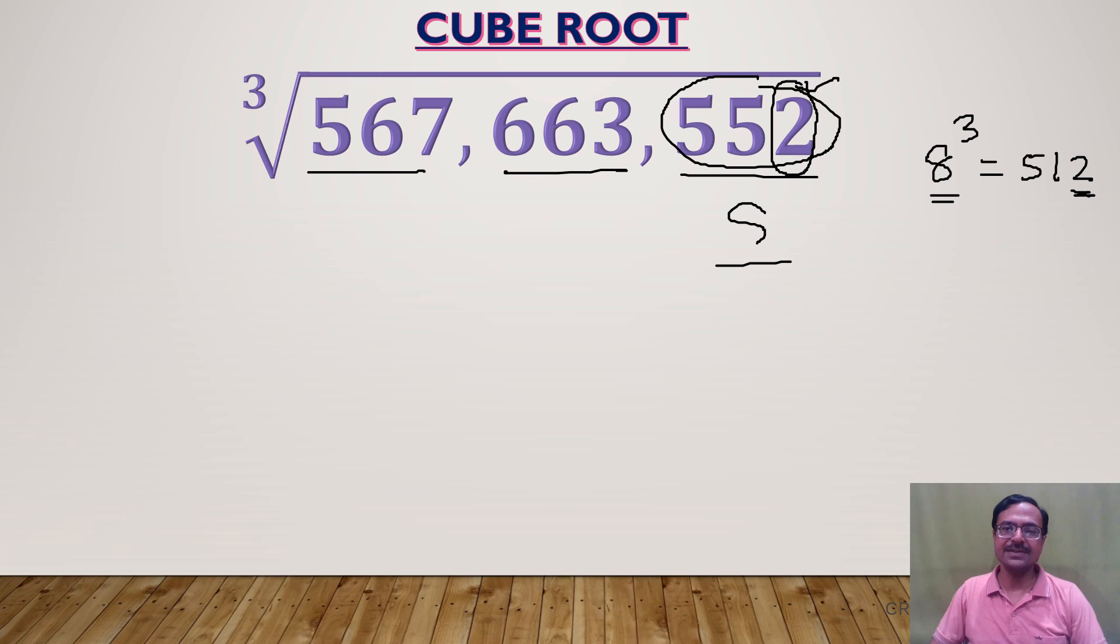What about the first part? 567. Again, 567—the perfect cube below 567 is 8 cube itself, 512, very close to 567 and below 567. But if you take 9 cube, it will go to 729, which is much above 567. So the first part of my answer is also 8. This digit.